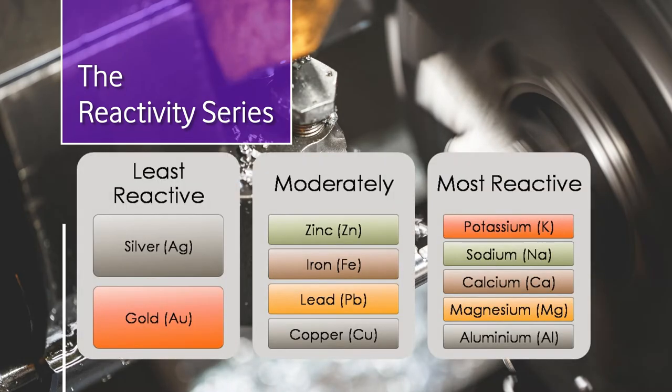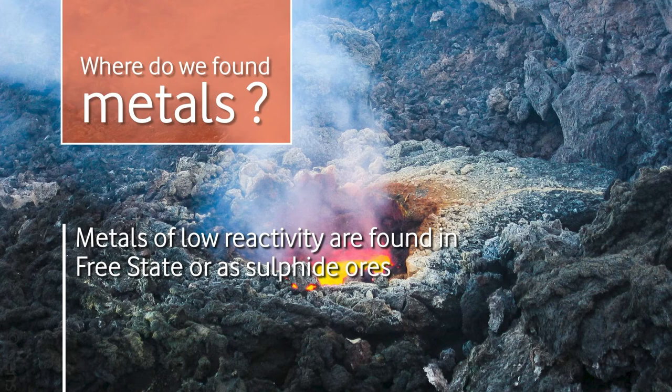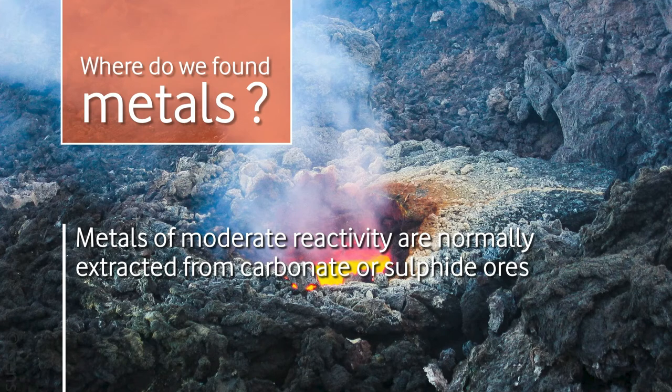Learners can classify metals on the basis of their observations into least reactive, moderately reactive, and most reactive. Least reactive: silver and gold. Moderately reactive: zinc, iron, lead, copper. Most reactive: potassium, sodium, calcium, magnesium, aluminium. This concept of reactivity is important because when talking about metal ores and their extraction, the reactivity series plays a key role. Metals of low reactivity are found in free state or as sulfide ores, whereas moderately reactive metals are extracted from carbonate or sulfide ores.